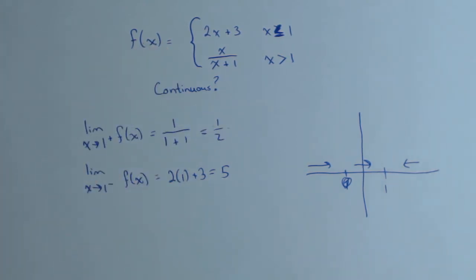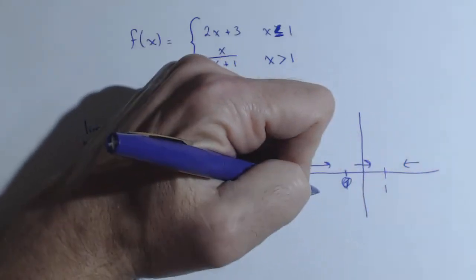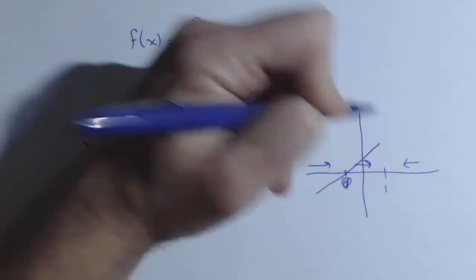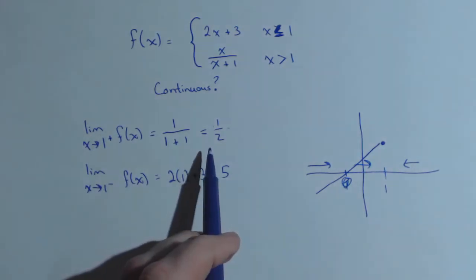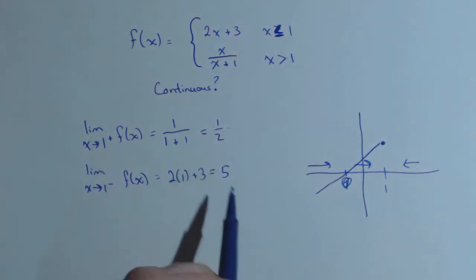So what that tells us is our function is going to two different places as we come in from the left and from the right. It's gonna be going towards 5 as we come in from the left, and towards 1 half as we come in from the right.